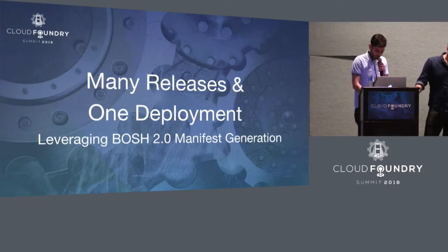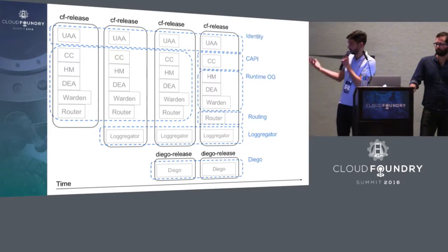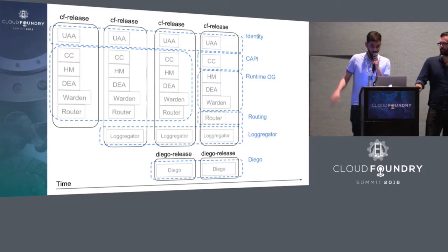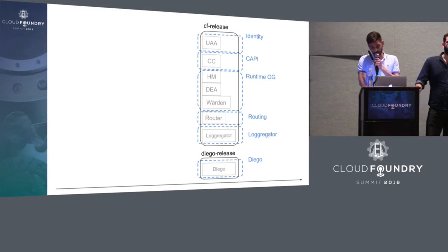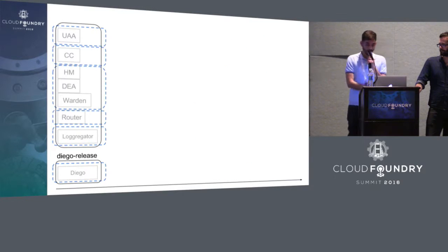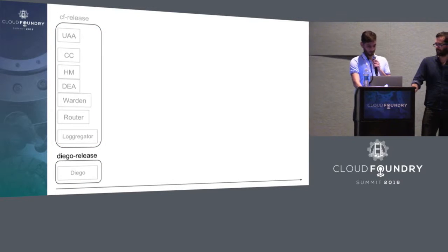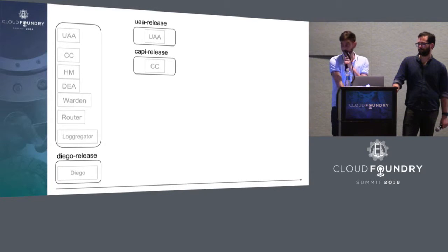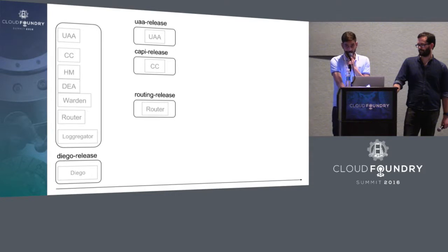Now we're going to talk about how we're splitting this up. CF release is currently one single deployment and we've spun out all these different teams that are all contributing to Cloud Foundry. Everybody is still pushing their code to one single release. We're going to move the present to the left to make room for the future — where we're starting to take CF release and break it up into other releases. These are becoming releases of their own, but currently the manifest still represents them all in one single release.